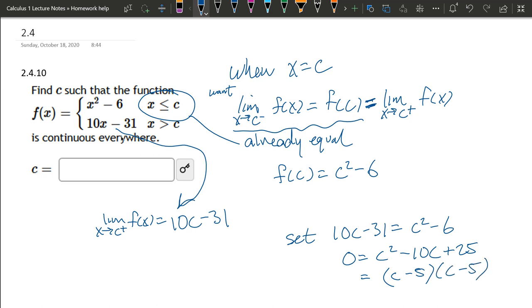So negative 5 times negative 5 is positive 25. Negative 5c and another negative 5c add together to negative 10c, and we've got c squared. So by the zero product property, 0 equals c minus 5, so c equals 5. And that will be our c value.